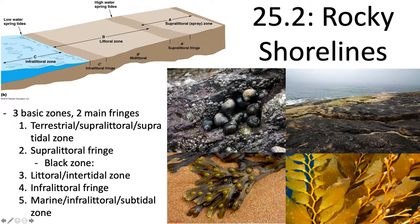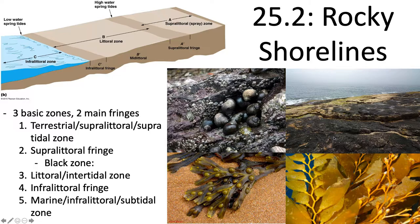Other things that grow in the black zone besides Calothrix cyanobacteria include Entophysalis green algae, Verrucaria lichens, and other organisms above the high tide waterline. If you've ever walked on rocks near the ocean and found them really slippery before reaching the ocean proper, that's because of this cyanobacteria, algae, and lichen growing in the supralitoral fringe. You also get herbivores like Littorina snails that feed on the black algae.